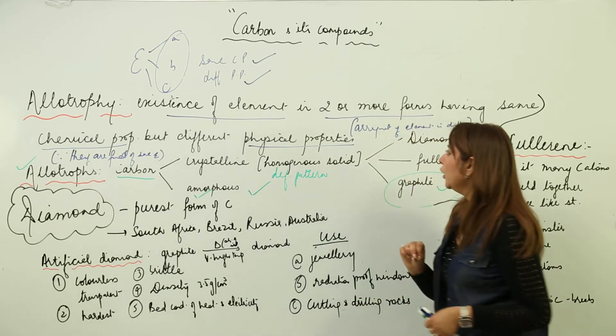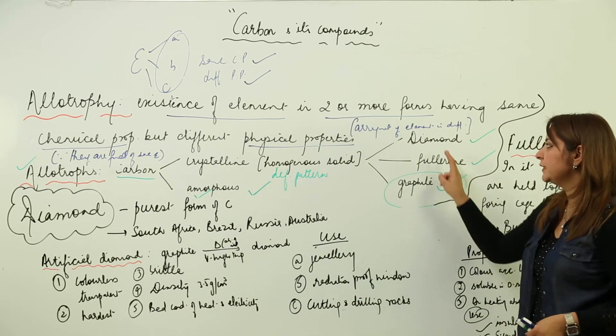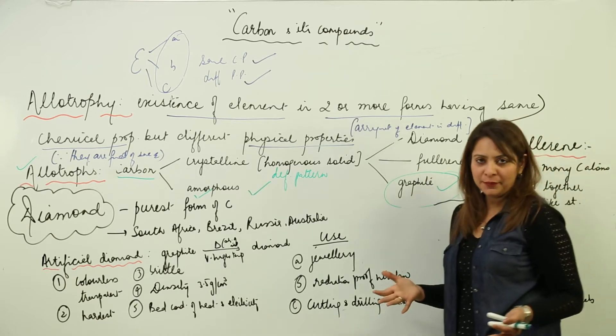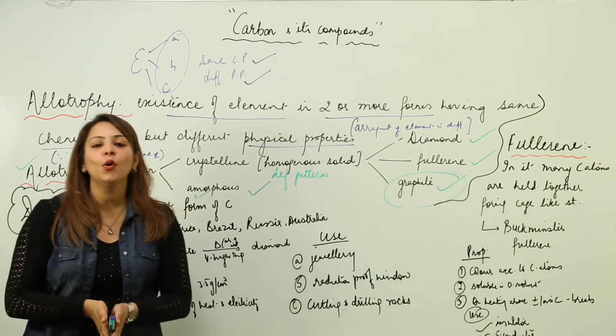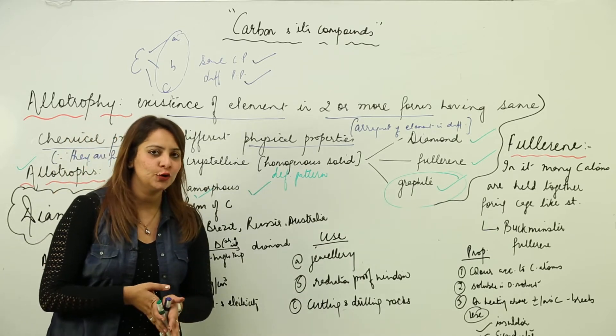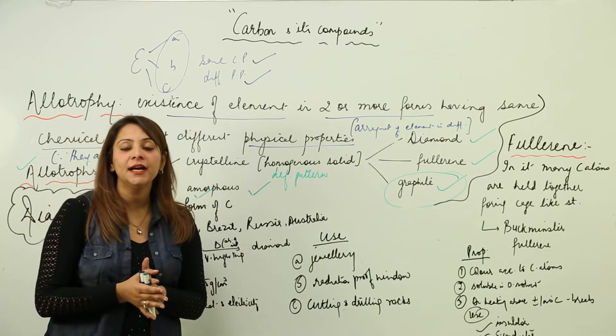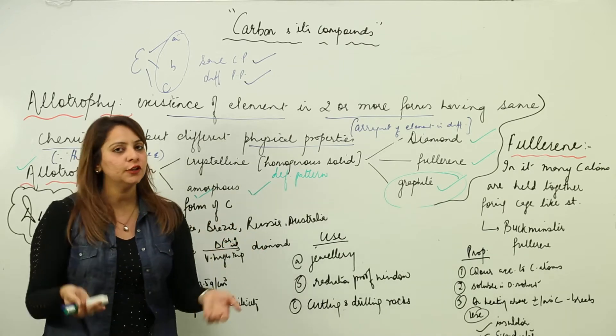Now the second crystalline form which we are going to study is the diamond. As you all are familiar with diamonds, and you know that diamonds are a girl's best friend, we are going to start with that allotrope, diamond, and learn about the structure of the basic diamond.